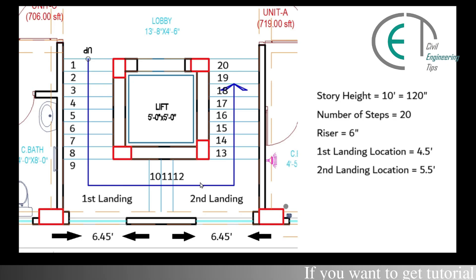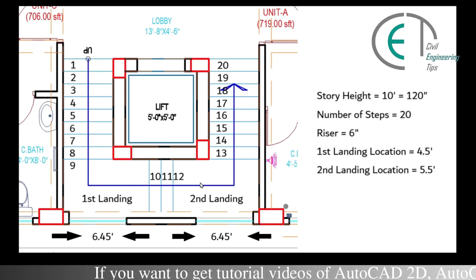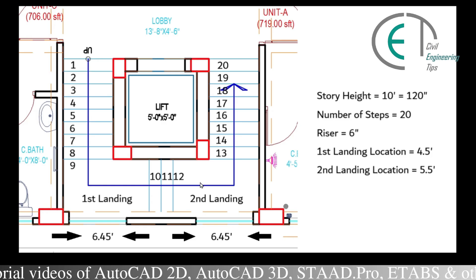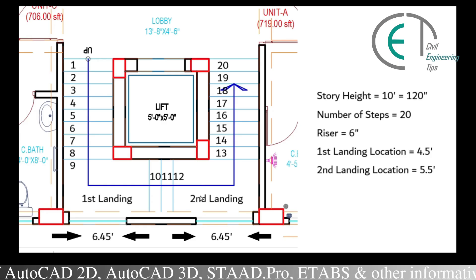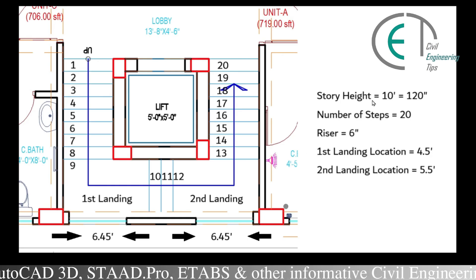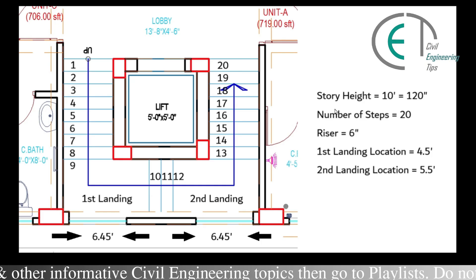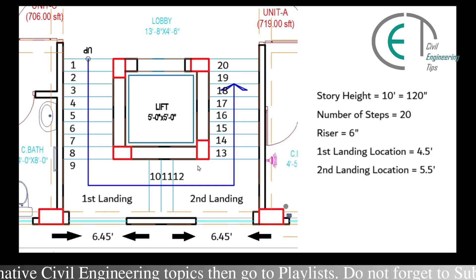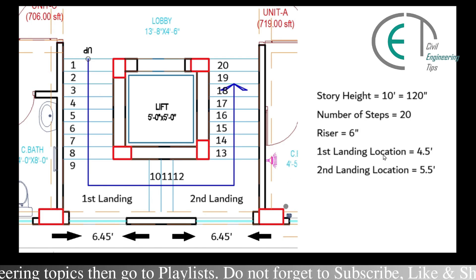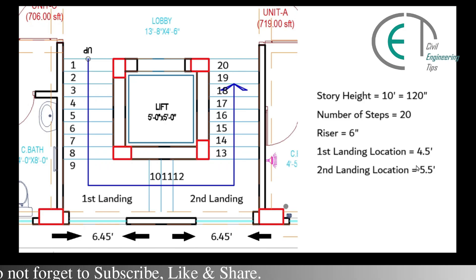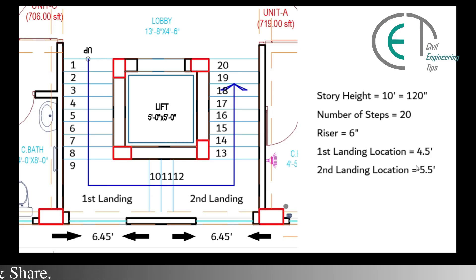Hello everyone, I am Shane and you are watching Civil Engineering Tips channel. In today's video we are going to model a two-landing stair in ETABS for a G plus 7 storied building. This figure is taken from the architectural plan and here we can see two landings. Story height is 10 feet and number of steps is 20, giving a riser of 6 inches. With this data, the first landing is at 4.5 feet from the floor and the second landing is at 5.5 feet from the floor.